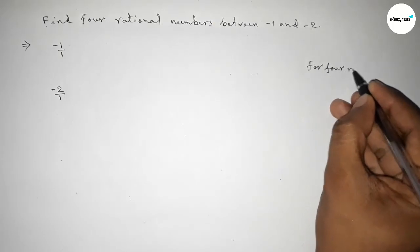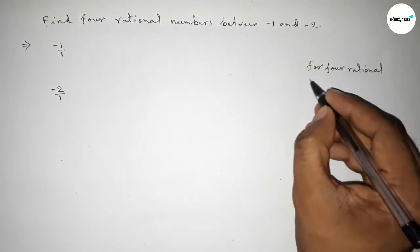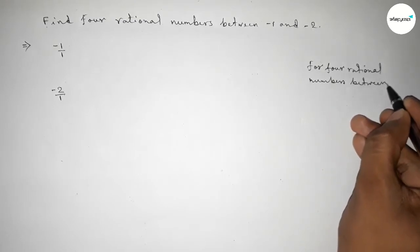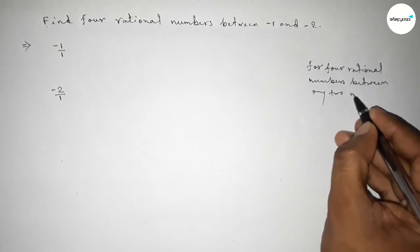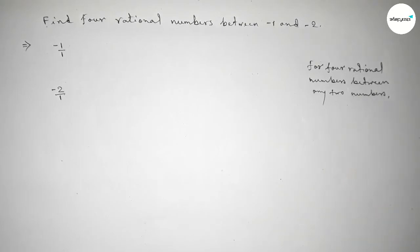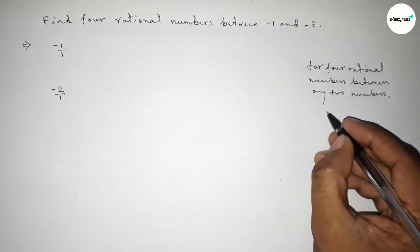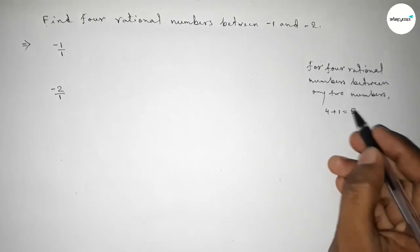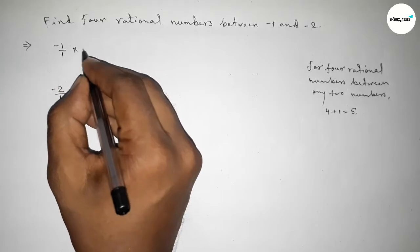We should multiply both numbers by 4+1. So we multiply both numbers by 4+1 = 5, up and down. Multiplying by this way, here 5 and here also up and down by 5.